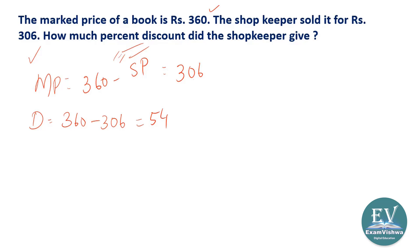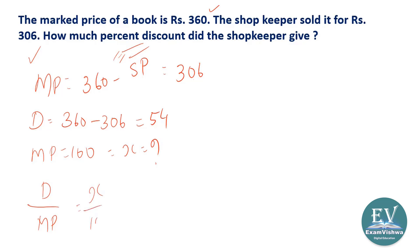The simplest way of doing this is to calculate the discount percentage — that means if the market price is 100, how much is the discount? We make a relationship: discount upon marked price equals X upon 100. In this case, the discount is 54 and the market price is 360. X will be the discount in the case of 100.